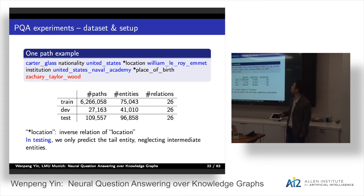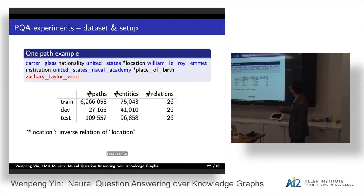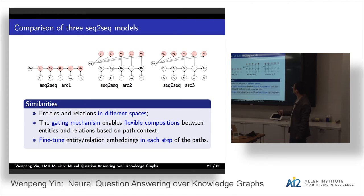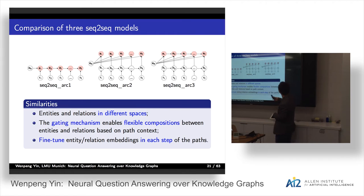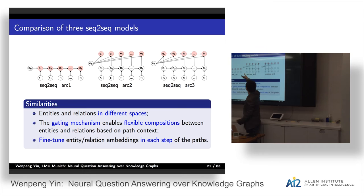A discussion arose about path length: the head entity has very little to do with the tail entity when the chain is pretty long, especially in the first architecture. In prediction, we encode the head entity with the last hidden state so its influence diminishes over long paths. In architecture two, we compose the head entity and the last hidden state directly. At test time there are no intermediate nodes, so we predict from head entity to tail entity using only the head entity and relations.